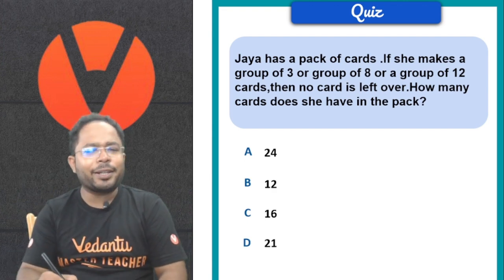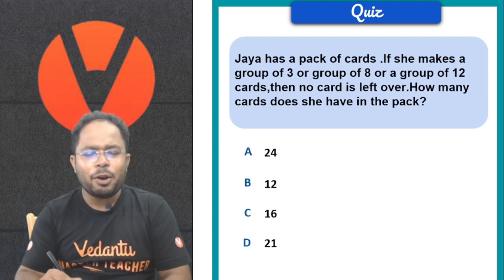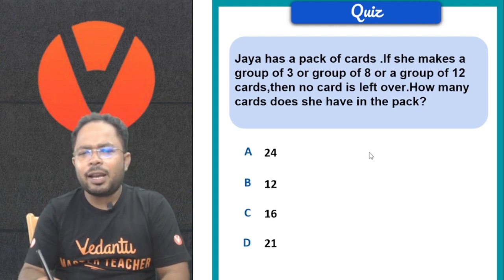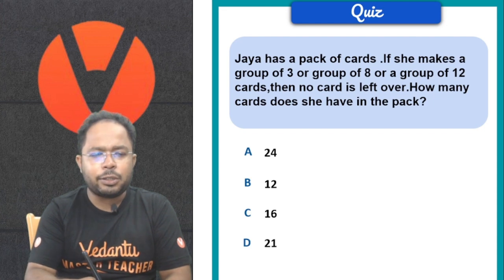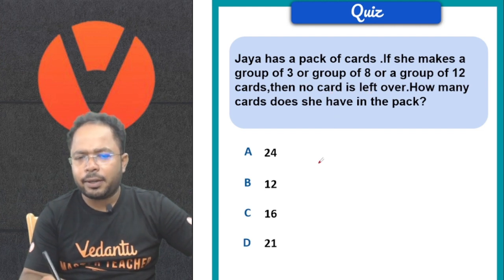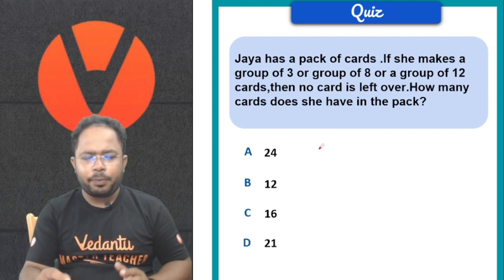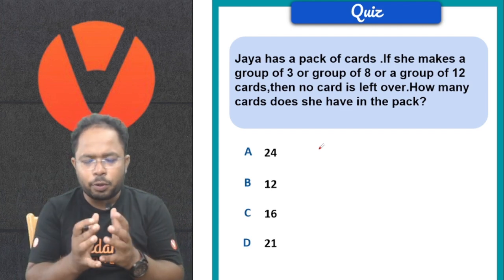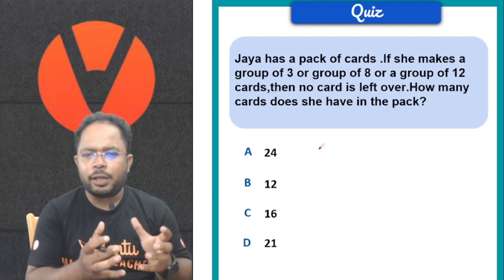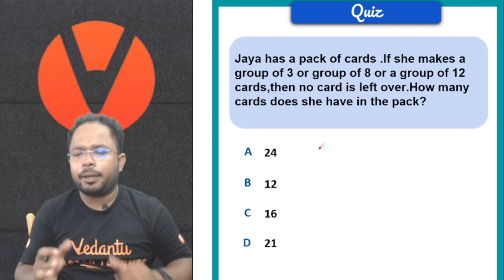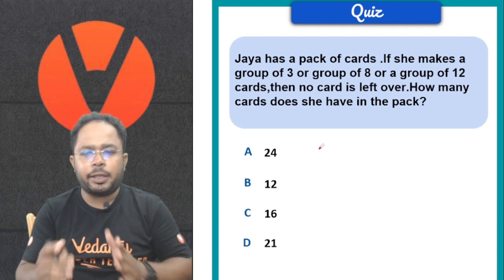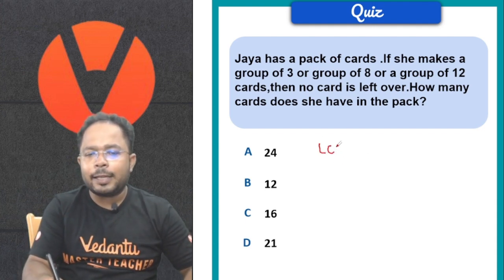I hope everyone has solved the question and posted the answer in the comment box. Let's discuss. Jaya has a pack of cards. We need to make groups of 3, 8, or 12. Since we need a group where no cards are left when divided, we should go with LCM.